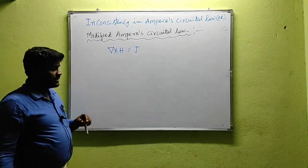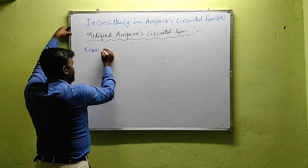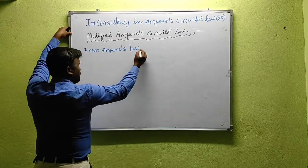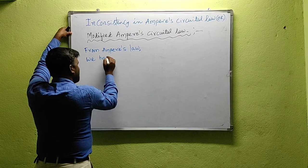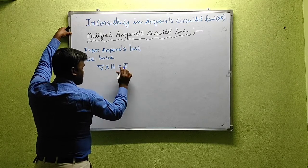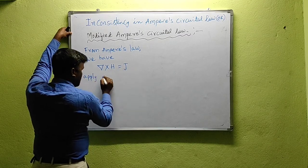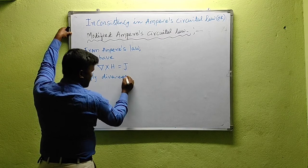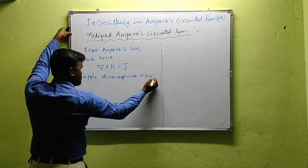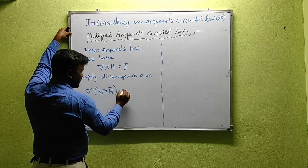Now, let us apply divergence on both sides. From Ampere's Circuit Law, we have del cross H equal to J. Applying divergence on both sides, we will get: del dot (del cross H) on the left hand side is equal to del dot J.